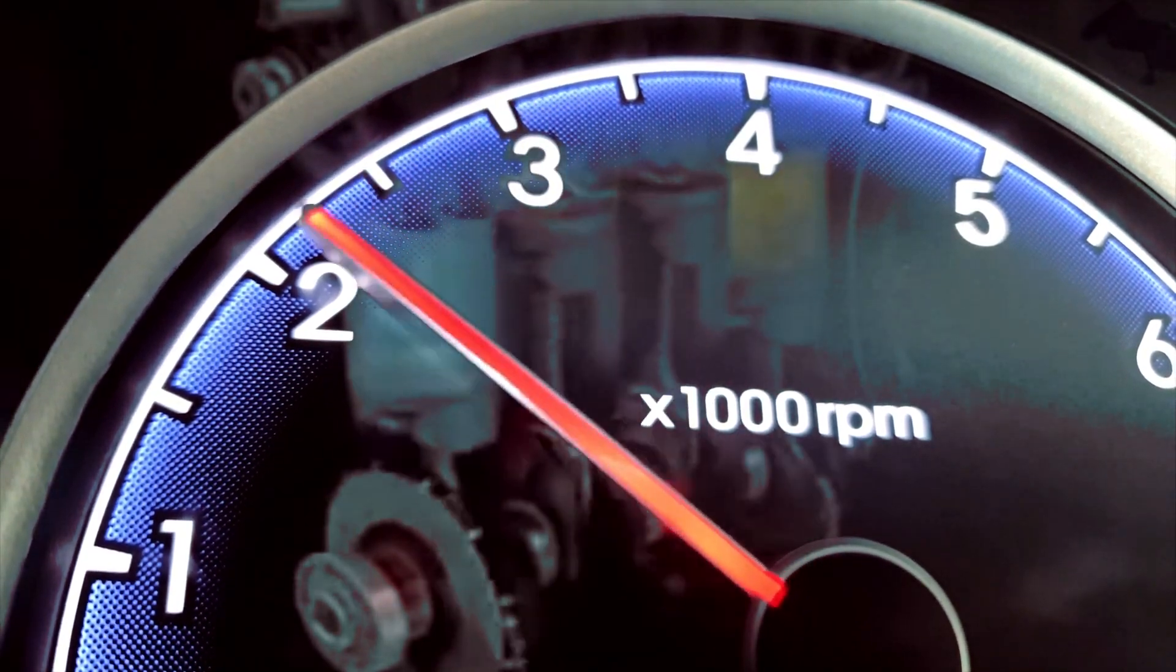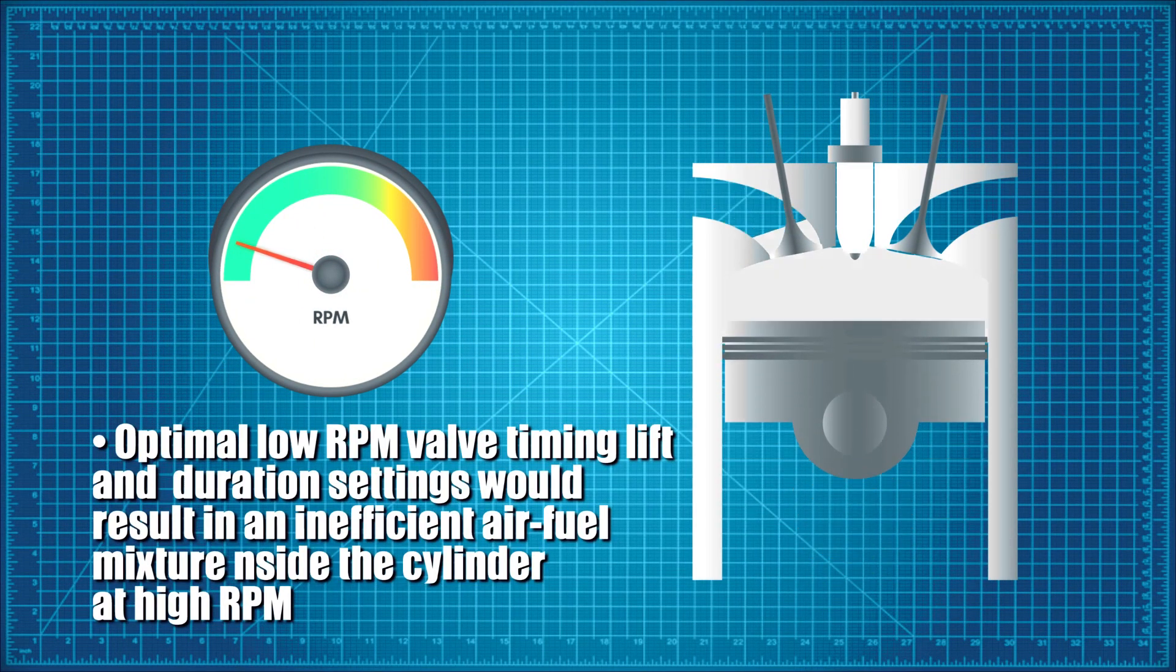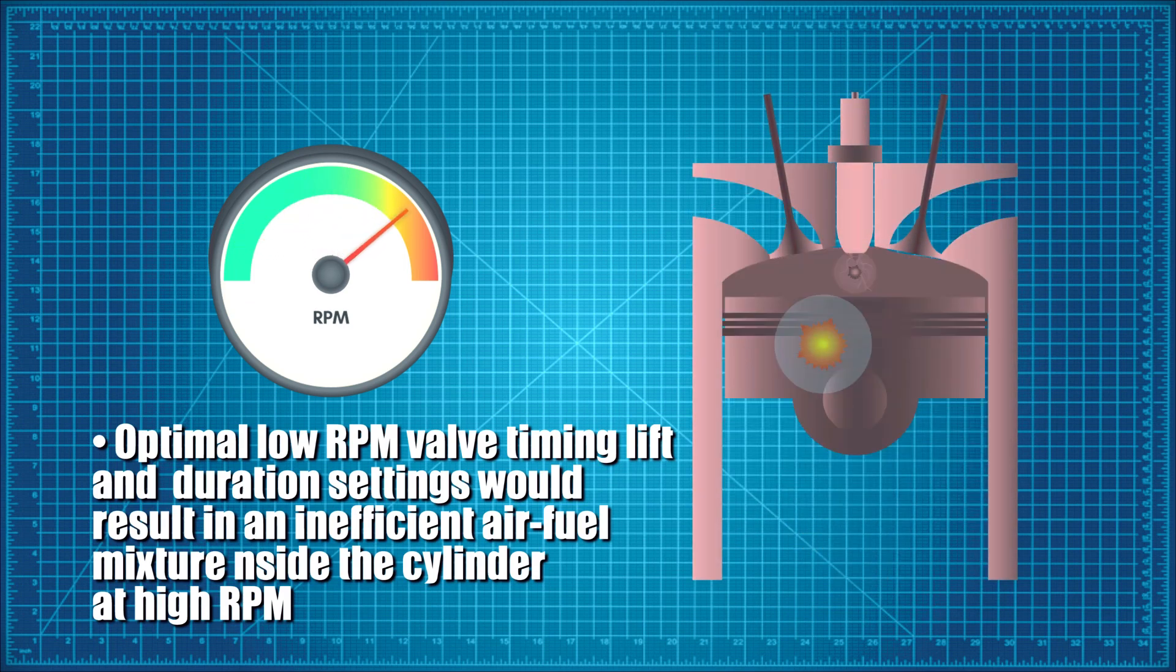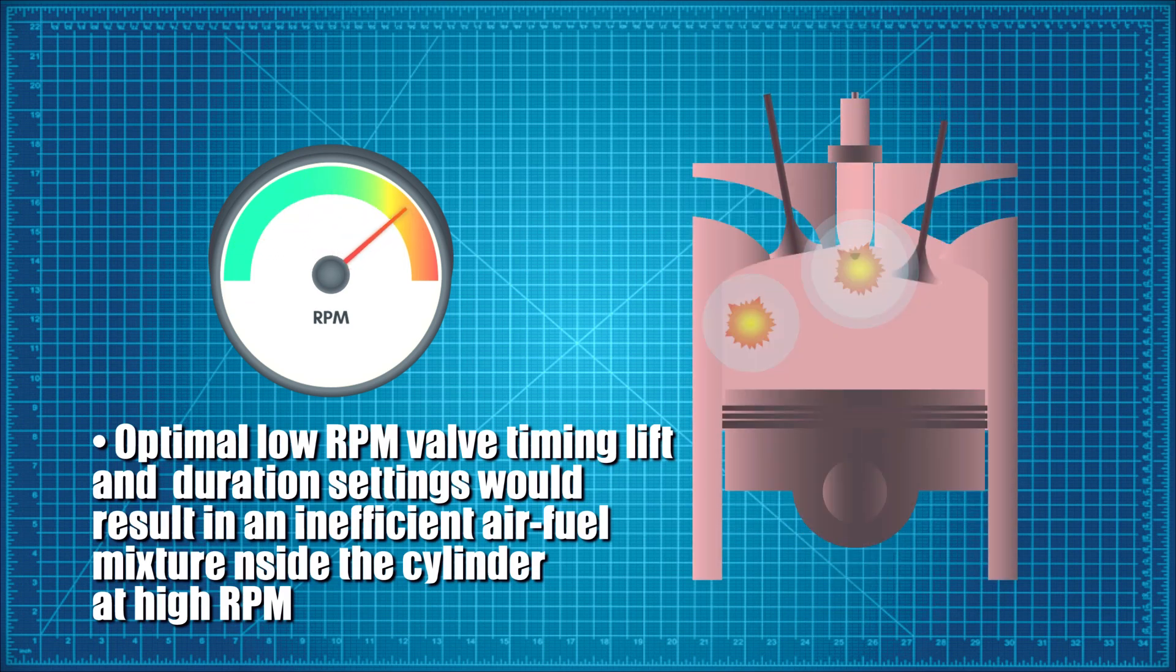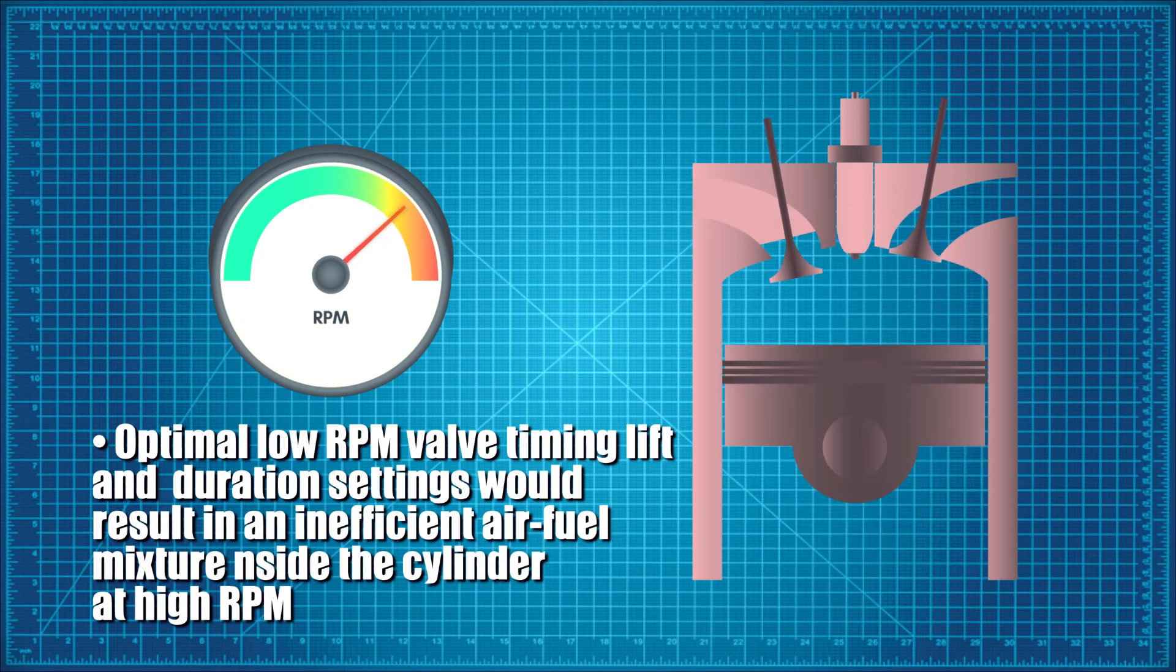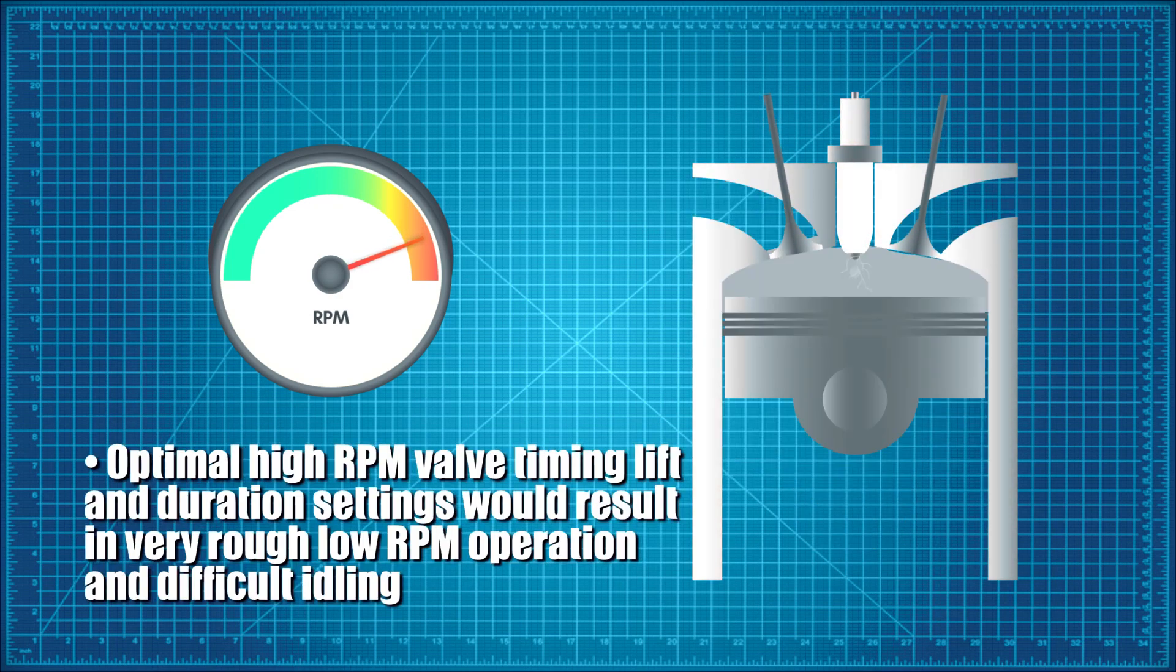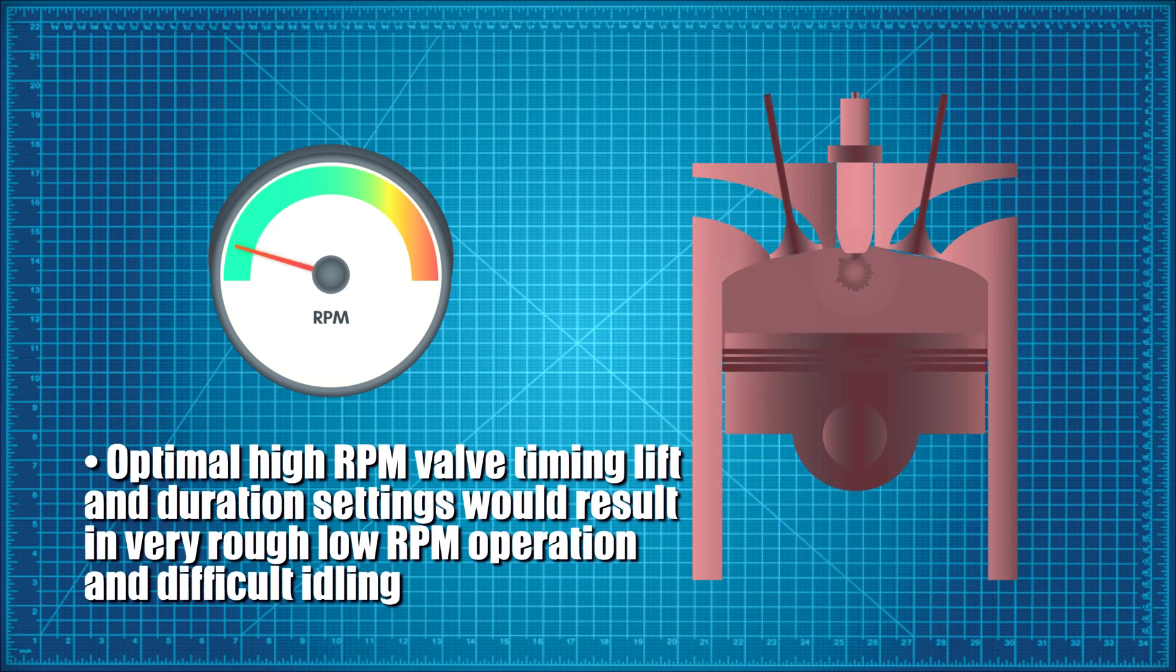For example, the optimal low RPM valve timing, lift, and duration settings would result in an inefficient air-fuel mixture inside the cylinder at high RPM, thus considerably limiting engine power output. Conversely, optimal high RPM valve timing, lift, and duration settings would result in very rough low RPM operation and difficult idling.